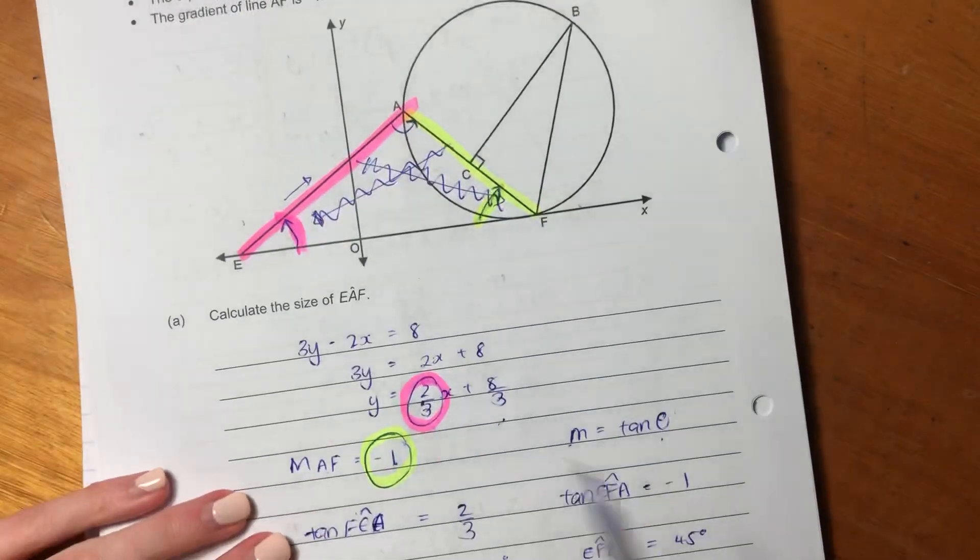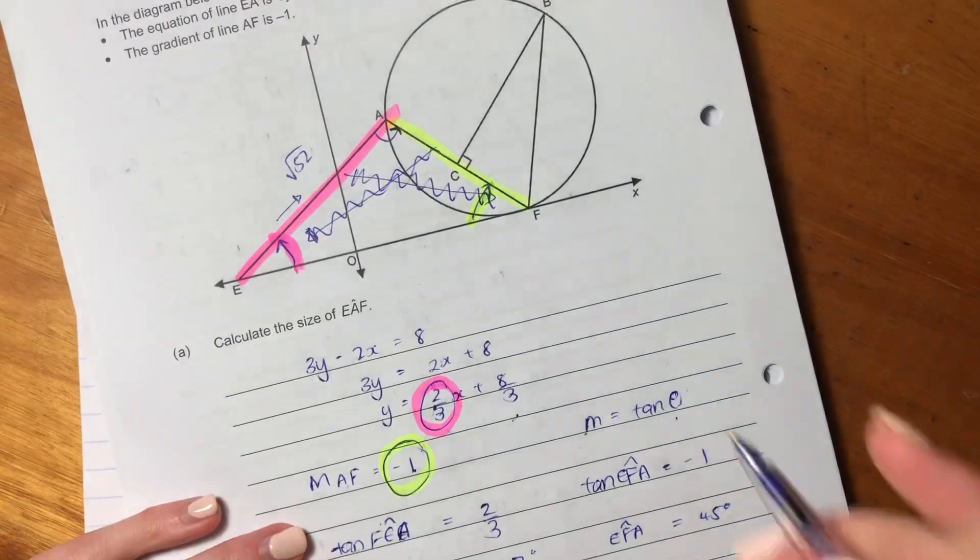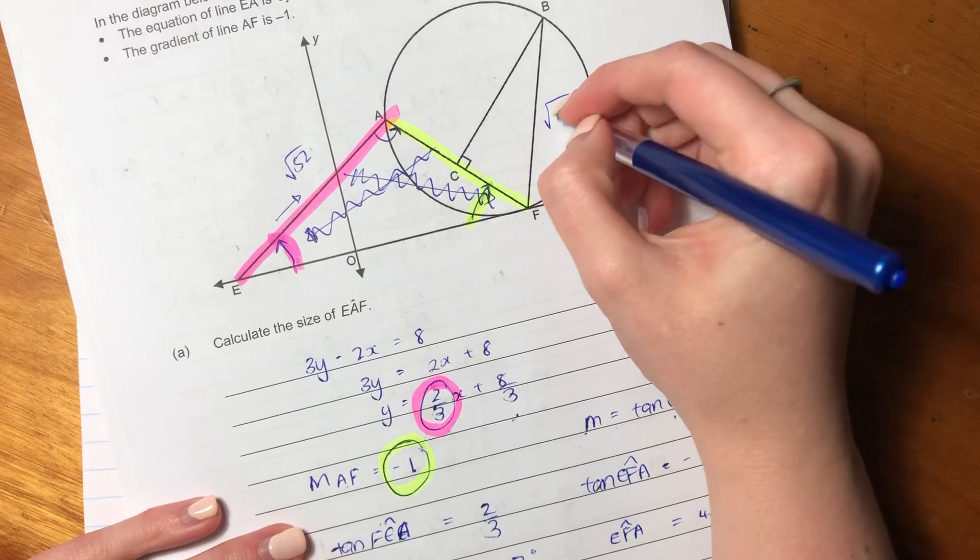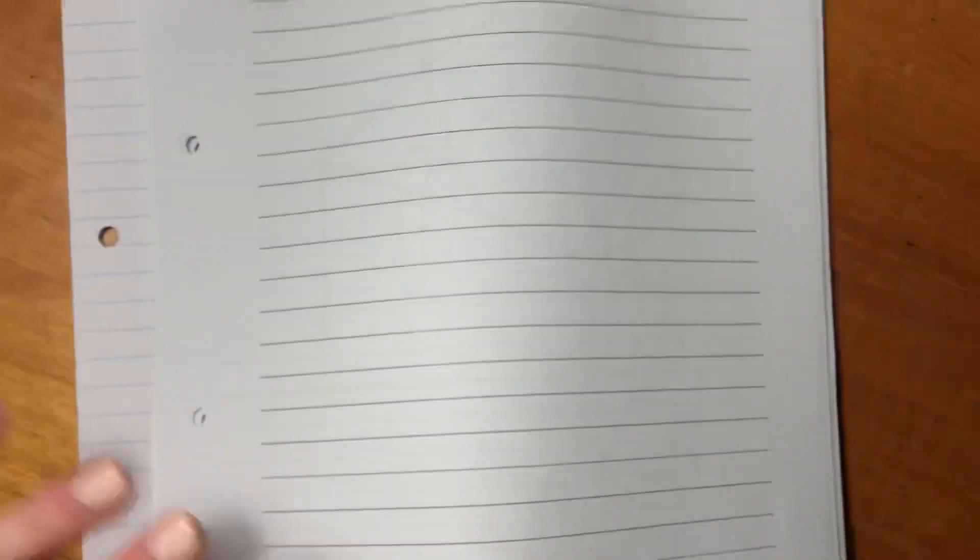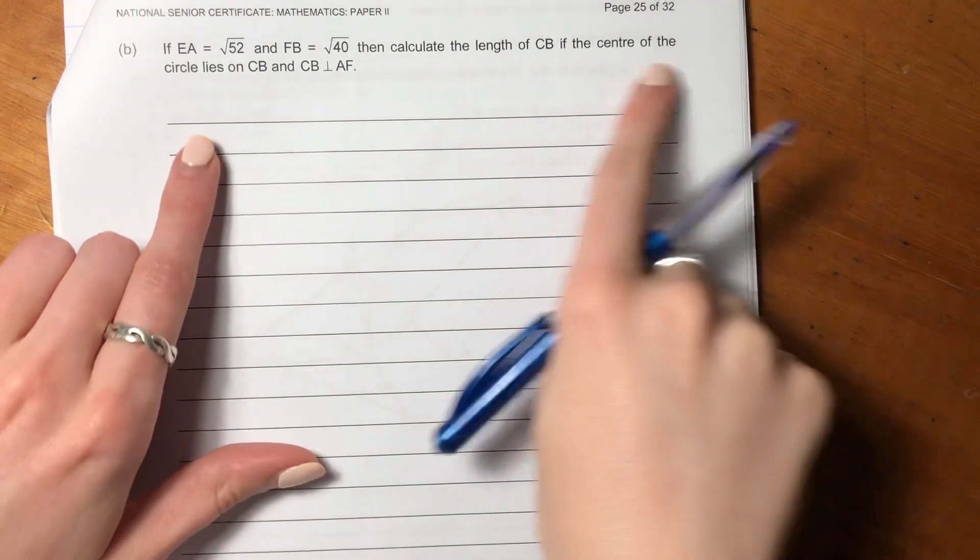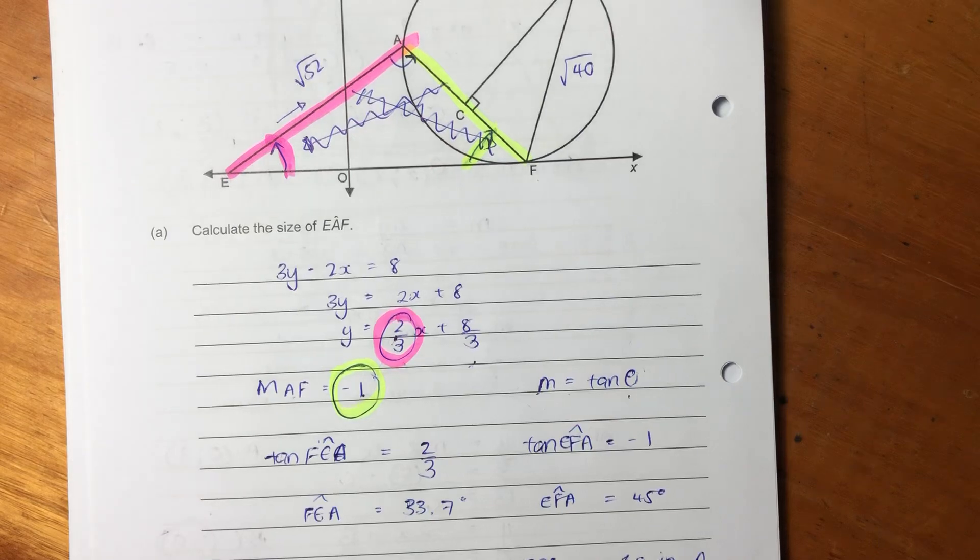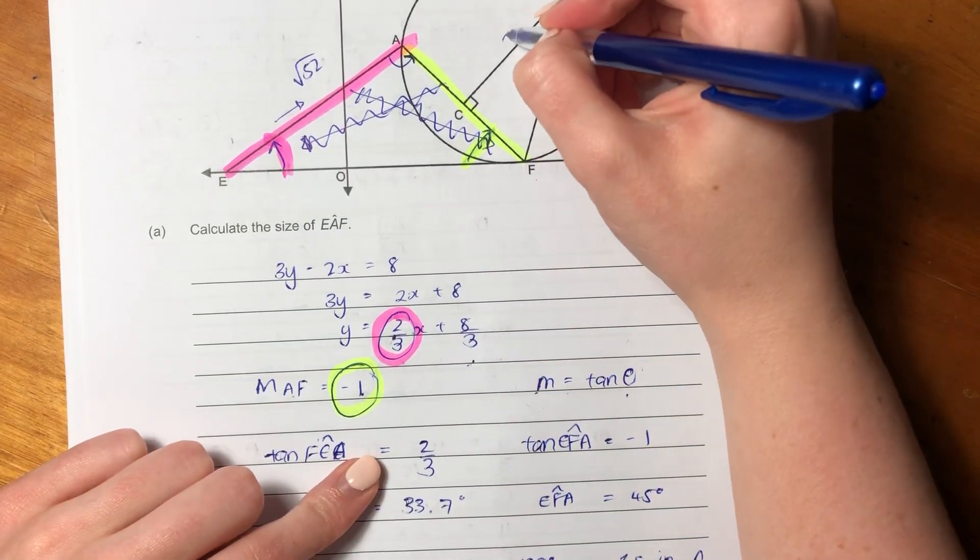So now B is an interesting one. If EA equals square root of 52, so this is EA, and FB equals square root of 40. Then calculate the length of CB if the center of the circle lies on CB and CB is perpendicular to AF.